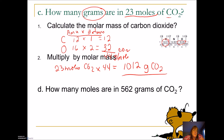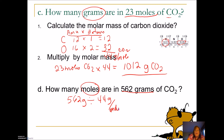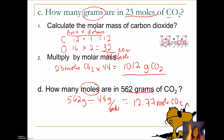What if I want to know how many moles there are in 562 grams of carbon dioxide? Now I'm given grams and want to find moles, so I write down 562 grams and divide by molar mass — 44 grams per mole, which we just calculated. So 562 divided by 44 gives 12.77 moles. When you have moles, you multiply. When you have the other unit, you divide. If it's molecules, use 6.02 times 10 to the 23rd; if it's mass, use molar mass or atomic mass from the periodic table.